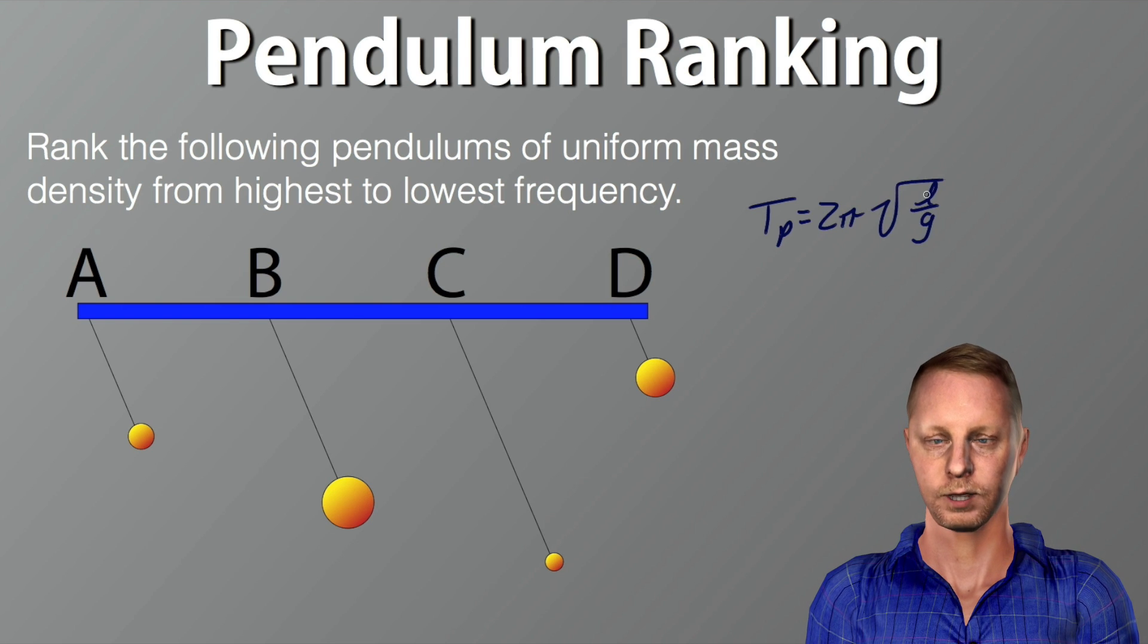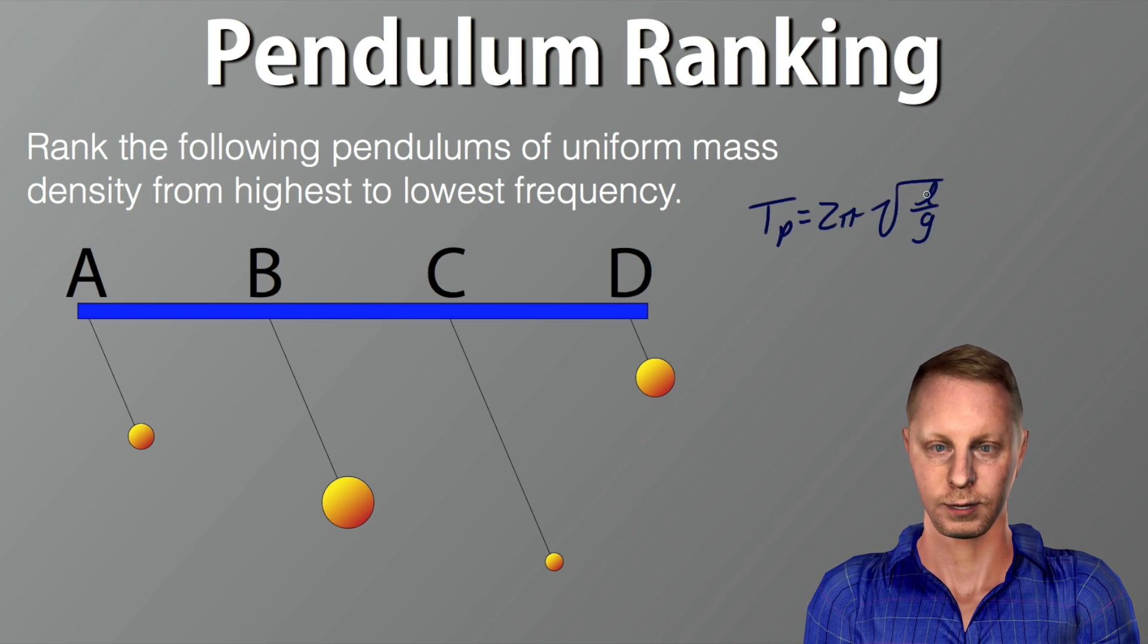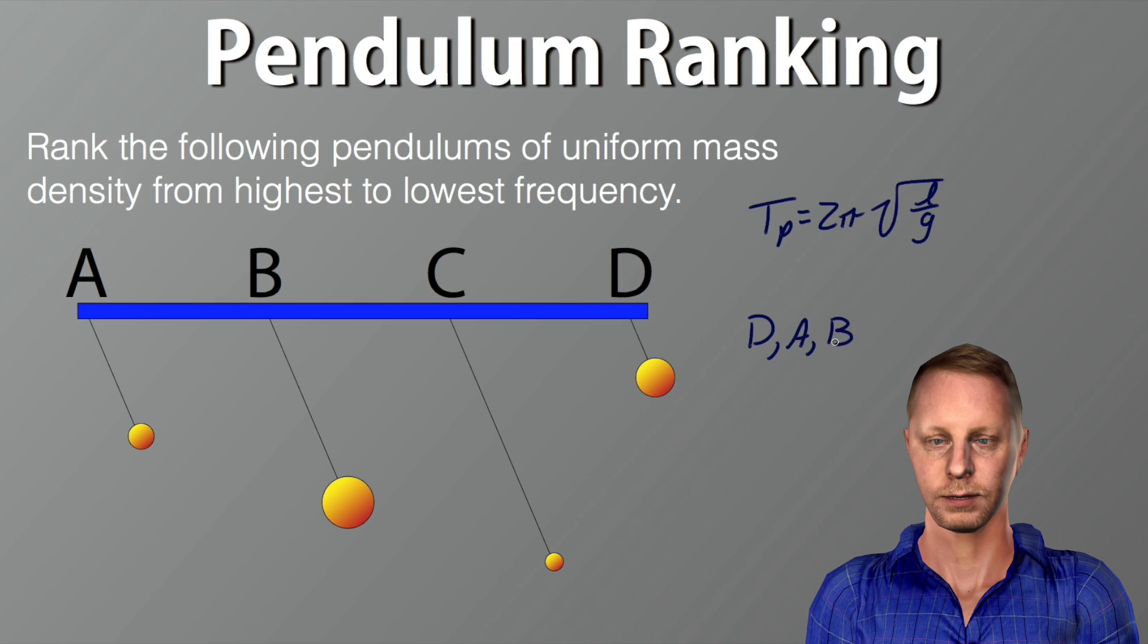The period of the ideal pendulum depends on 2π square root l over g. So bigger length, bigger period. So the ones that are the shortest will have the shortest period. So it looks to me like we're going to have d first, then probably a, b, and then c.